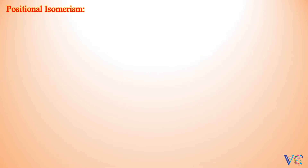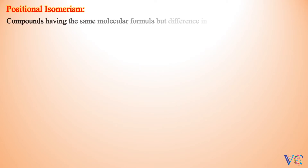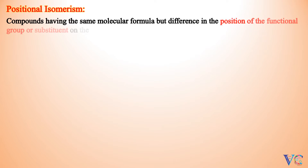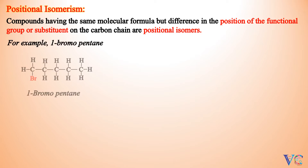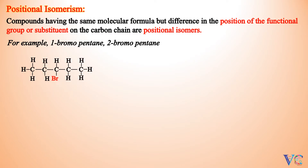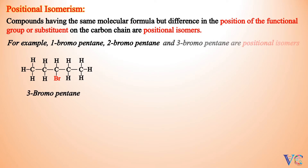Positional Isomerism: compounds having the same molecular formula but difference in the position of the functional group or substituent on the carbon chain are positional isomers. For example, 1-Bromopentane, 2-Bromopentane, and 3-Bromopentane are positional isomers.